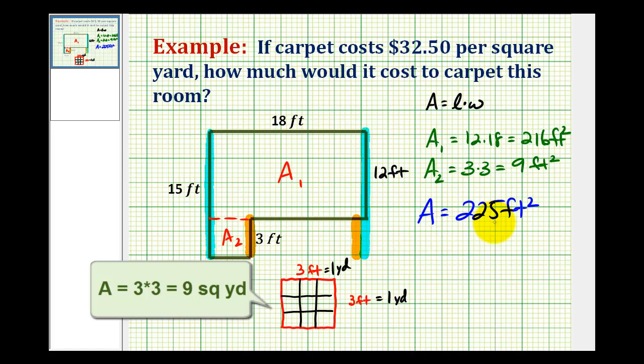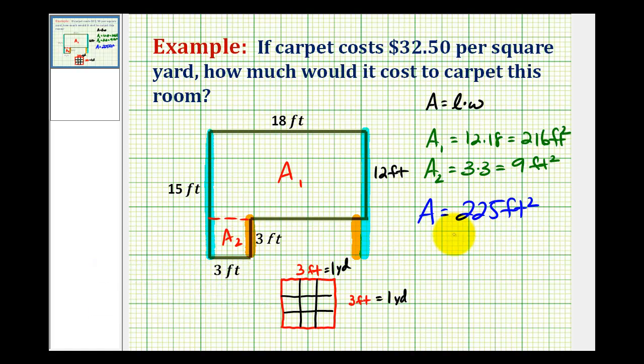So to determine the number of square yards, we need to divide 225 by 9. There's 2 9's in 22, and there are 5 9's in 45, so we have a remainder of 0, so 225 square feet is equal to 25 square yards.